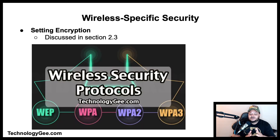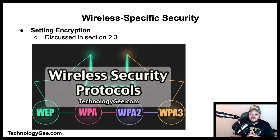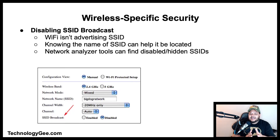Setting the encryption for wireless networks, whether they are business networks or SOHO networks, has already been covered in the video titled 'Wireless Security Protocols and Authentication.' Go to the CompTIA A+ 220-1002 playlist and look for video 2.3.